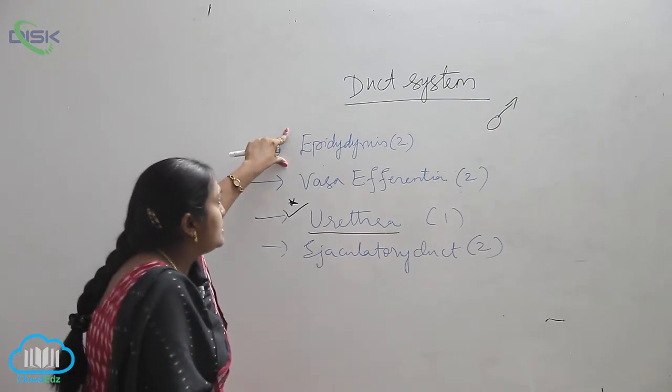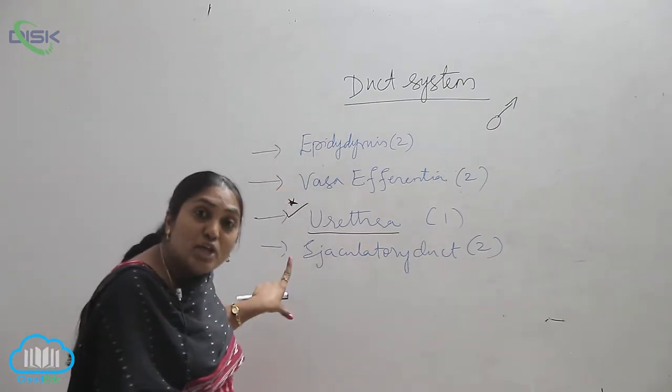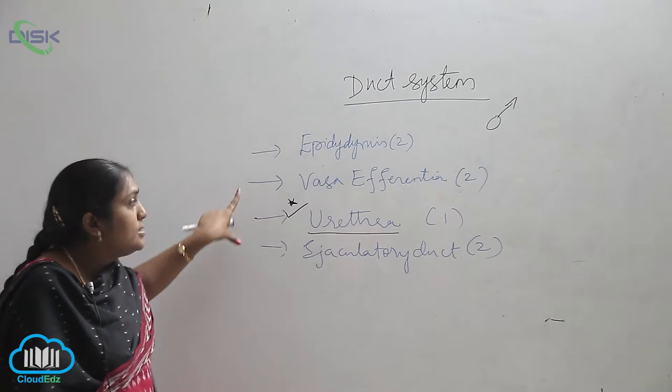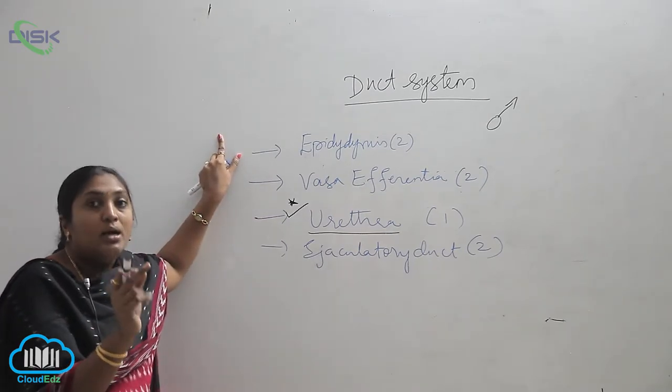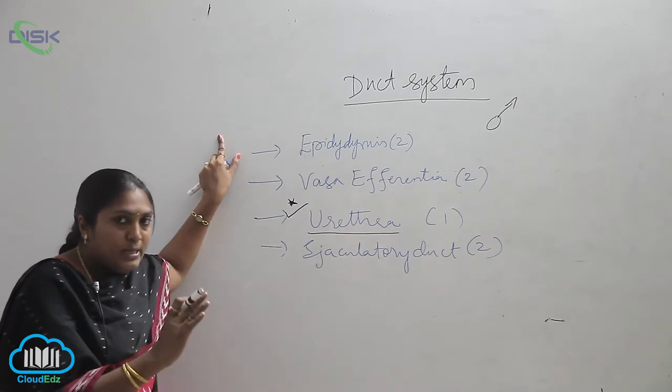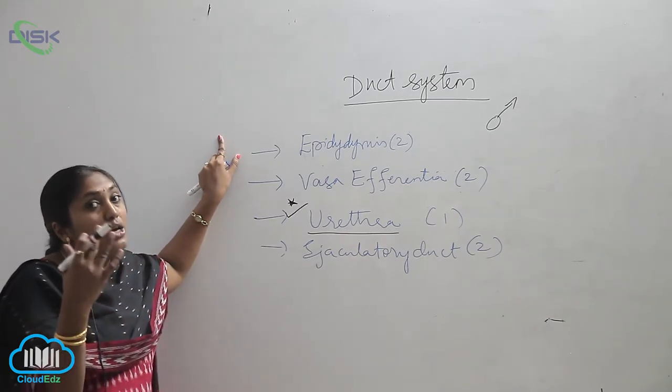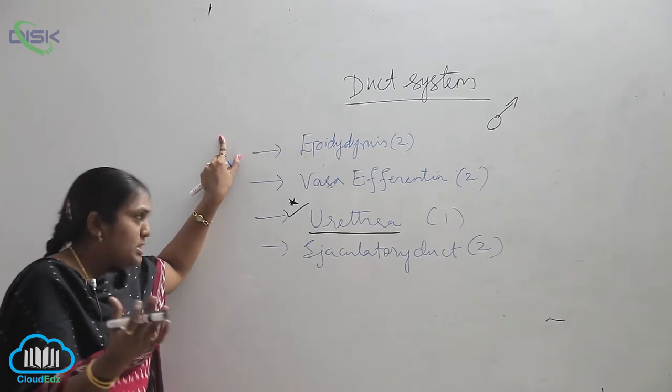Whereas the epididymis, vasa efferentia, and ejaculatory duct—all these three, which are two in number—are helping in the transfer of sperms from the male system into the female reproductive system.